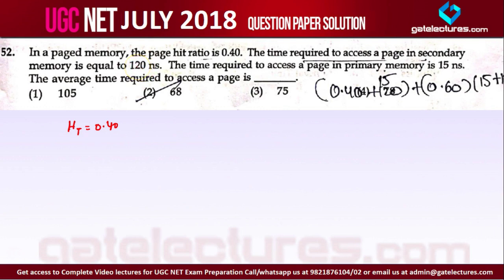Do not confuse this problem with the cache memory problem. They are simply saying if the page is not found in memory, then you have to search for the page in the secondary memory. That's why they have given the time for accessing the secondary memory - 120 nanoseconds. Now the time required to access a page in main memory, that is primary memory - primary memory, main memory, or simply memory are the same things, referring to RAM where we store the process. The access time of main memory is 15 nanoseconds.